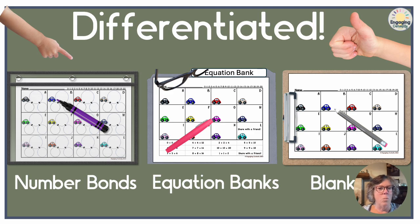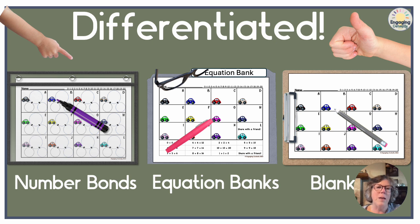Differentiation is a big one for this activity. There are three different worksheets that come with each set of task cards, providing one level of content differentiation. On the left we have number bonds; in the middle there's an equation bank which works just like a word bank to support students; and on the right is your more typical blank grid. In the color version, each box has a different color car, which visually supports students as they look for the appropriate question, since the task cards have the matching color for each square.